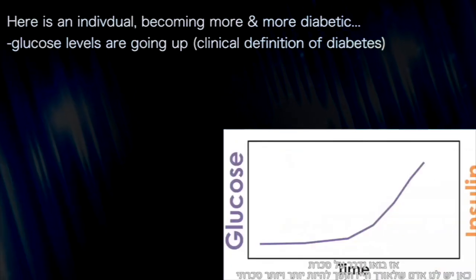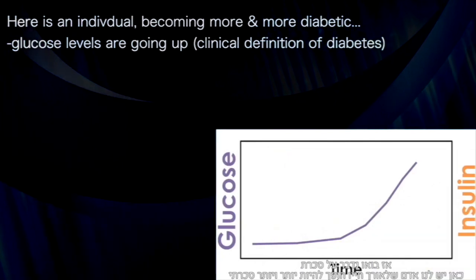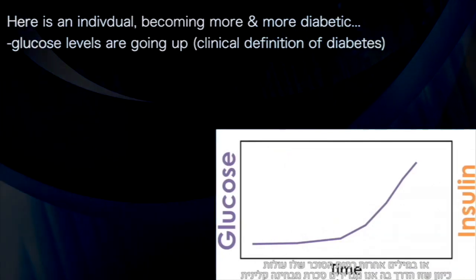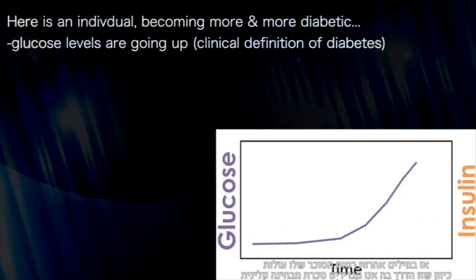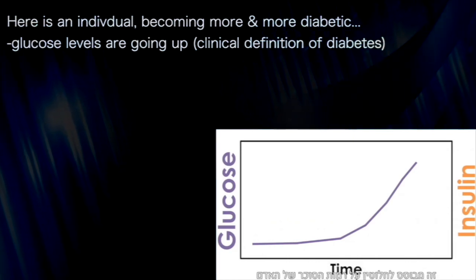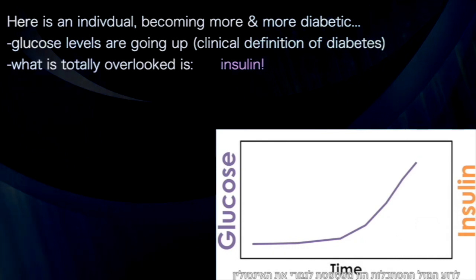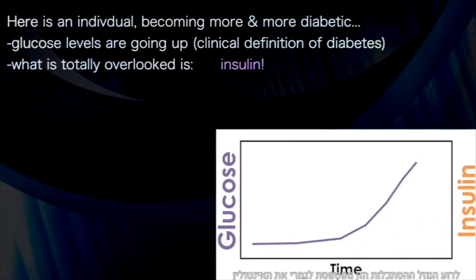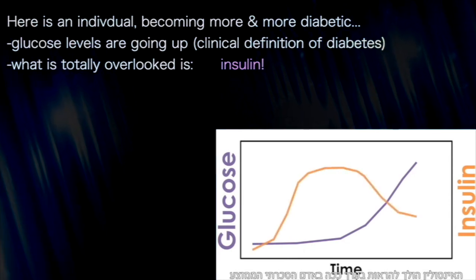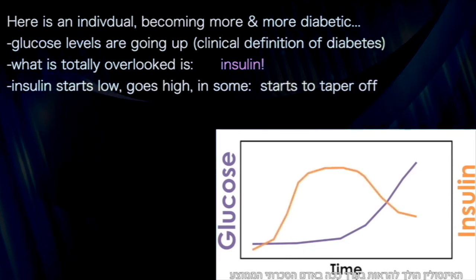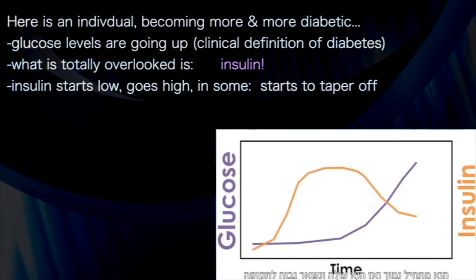With diabetes in mind, here we have an individual over the course of their life becoming more and more diabetic — glucose levels are going up, because that is how we define diabetes clinically. It is based wholly on glucose levels. Unfortunately, with this paradigm, what goes totally overlooked is insulin. In the average diabetic, insulin starts low and then it goes high.